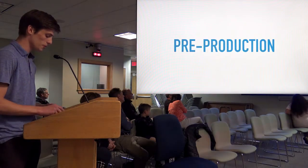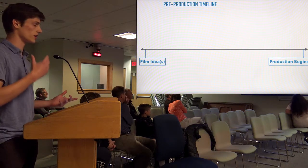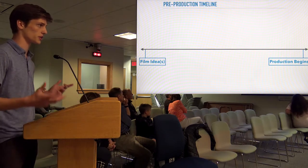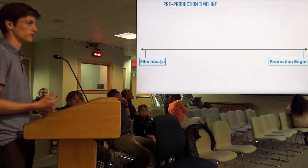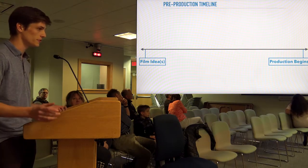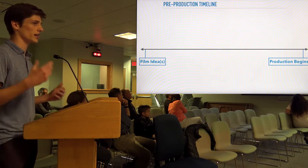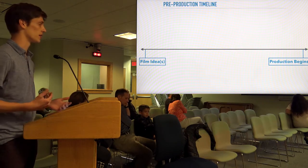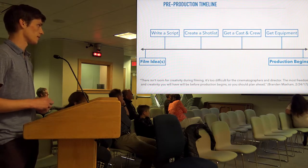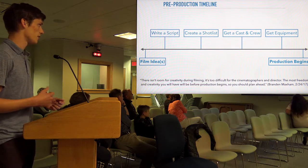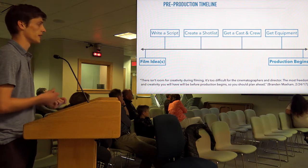Let's start with pre-production. The pre-production timeline goes from when you have a film idea up until when production begins, and it can last as long as you want. For example, James Cameron had the idea for Avatar for 15 years but didn't have the technological means to create it. Every pre-production timeline looks different, but here's how ours went: we wrote a script, created a shot list, got a cast and crew, and got our equipment.